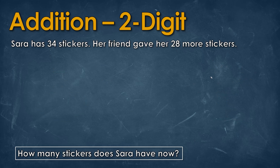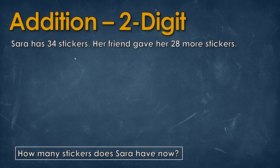So again, if we're looking to add, we always want to see a word like 'more', 'together', 'combined', or 'add'. We can figure out that we are really adding because there's going to be a time where we won't have the word 'addition' at the top and we'll have to determine if it's addition or subtraction. Anything that sounds like 'add' might be a synonym — something that means the same, like 'more', 'add', 'together', or 'combined'.